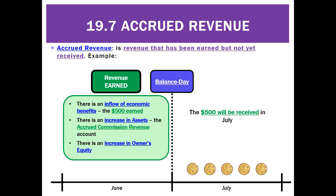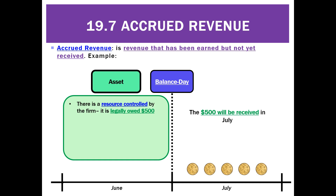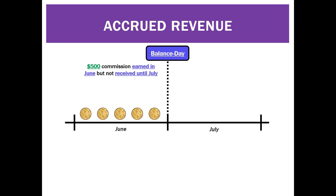We also have an asset because we haven't received this $500 yet — we'll get it in the future. So we have a resource controlled by the business; we're legally owed $500. It's arisen from a past event — we earned some commissions in June — and there will be a future economic benefit in the form of the $500 cash we're going to get in July. We call that asset accrued commission revenue.